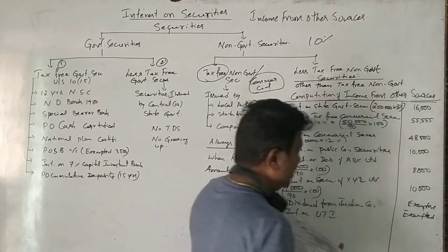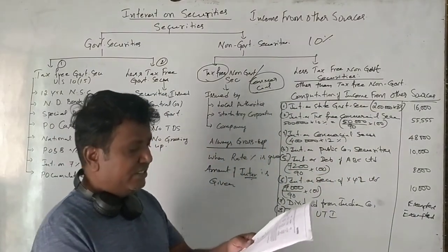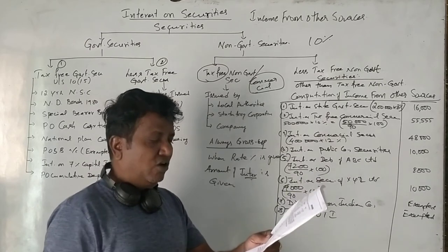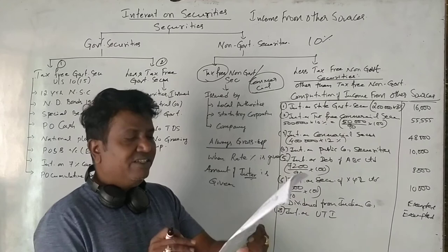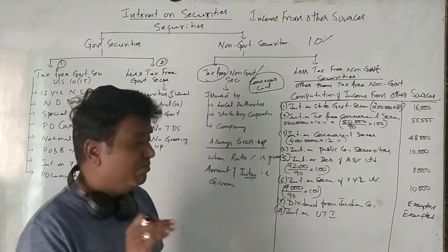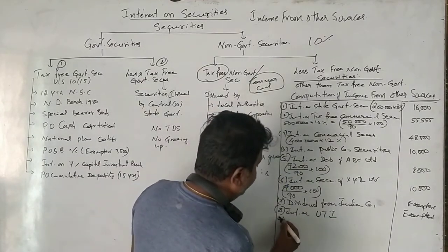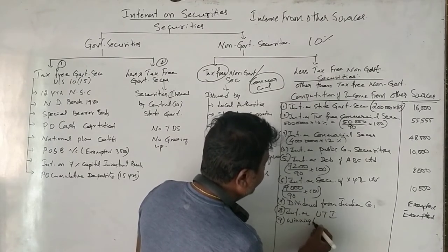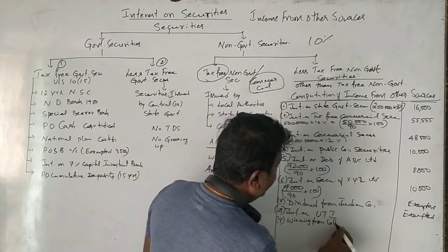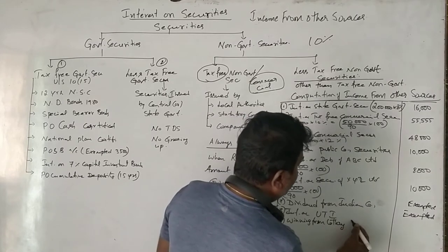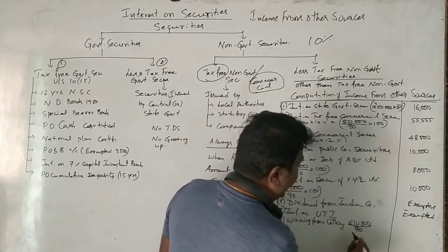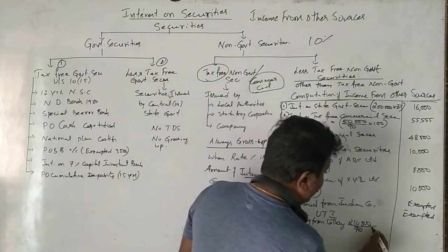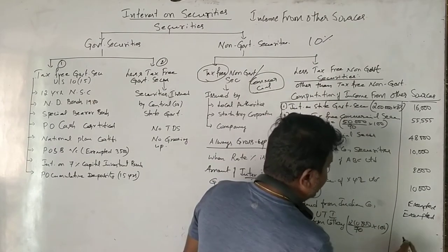Next: 2,10,000 net lottery income from Kerala state lottery. This is given as a net amount. For casual income like lottery winnings, the rate of tax is 30%. So the net amount represents 70%. Gross winning from lottery: 2,10,000 ÷ 70 × 100 = 3,00,000 rupees.